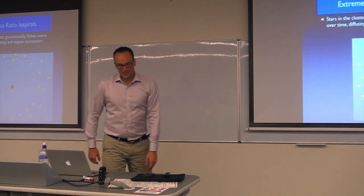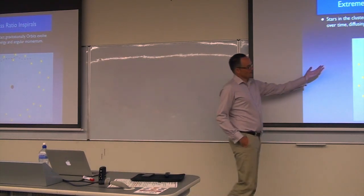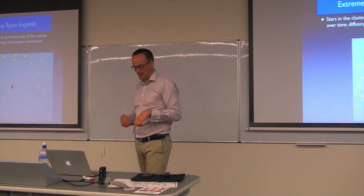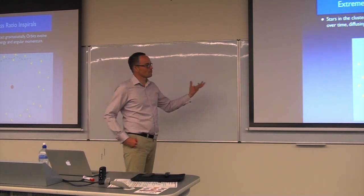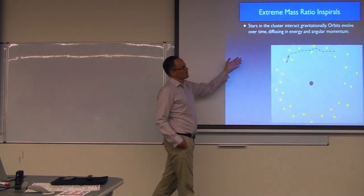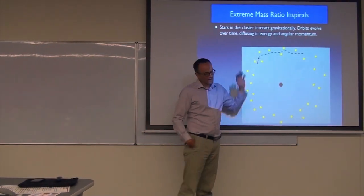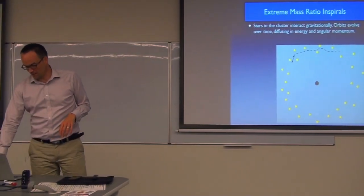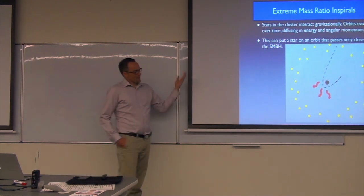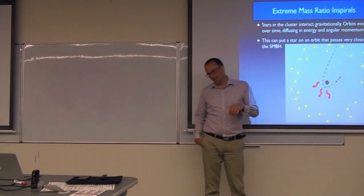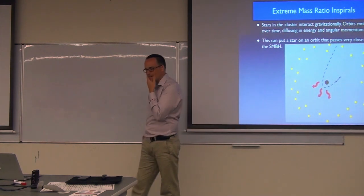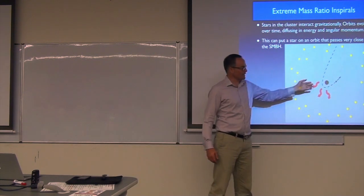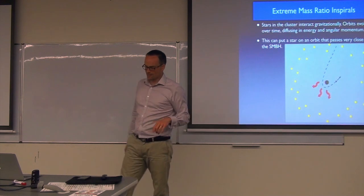The standard picture is that you have a bunch of stars around your black hole, moving around. When two stars come close to one another, they interact gravitationally. This is a diffusive process, so the orbits gradually evolve - their energy and angular momentum change over time - and this can lead to objects being put onto an orbit that takes them very close to the black hole in the centre. When this happens, you have a burst of gravitational radiation as the object passes the black hole, which dissipates a bit of energy and angular momentum, and can leave a small object bound to the central black hole.